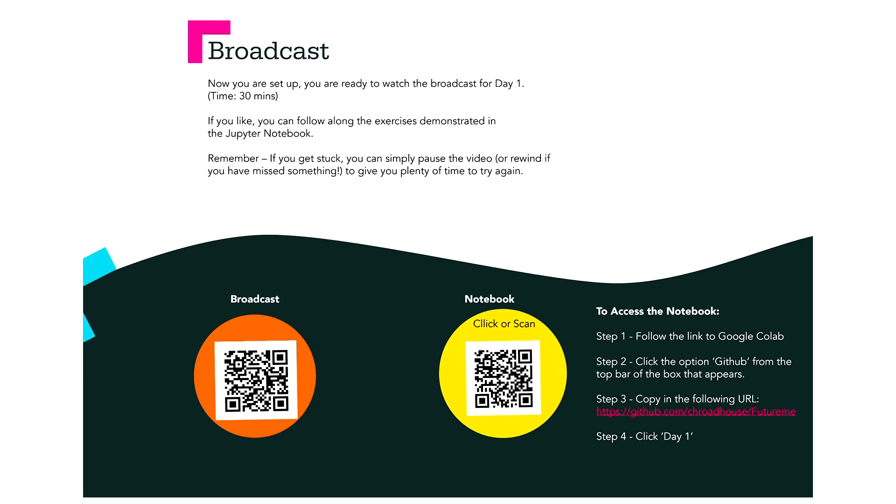Before we begin, I want to tell you how this course is going to work. The course is split up into four broadcasts, each with a corresponding Jupyter notebook - we'll explain what that is later. You can access them by following the instructions provided in your workbook. These Jupyter notebooks will take you through key concepts of data analysis and you can follow along during the broadcasts. They also have extra detail if you need further context. If you can't access them, don't worry - the main points will also be covered in your workbooks.